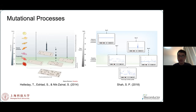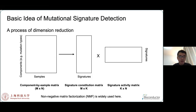To do this, researchers recently extracted distinct and recurrent mutation patterns from the mutation catalog of thousands of cancer genomes. The patterns are named Mutational Signatures. The basic idea to detect a Mutational Signature is quite simple: first, we construct a component-by-sample matrix, and then we decompose it into two matrices — one to represent the signatures, and the other to represent the contribution of the signatures. The NMF algorithm is widely used here.